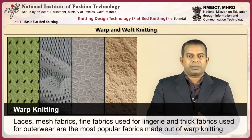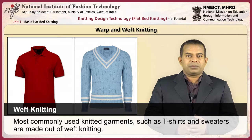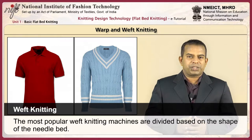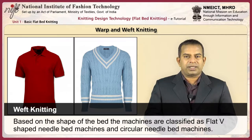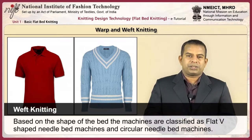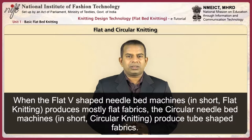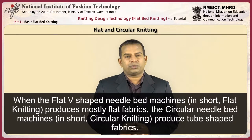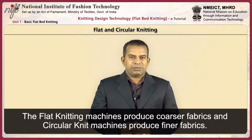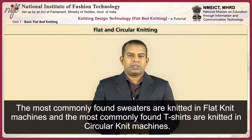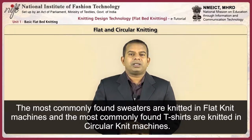The most popular weft knitting machines are divided based on the shape of the needle bed. Based on the shape of the bed, machines are classified as flat V-bed machines and circular bed machines. Flat V-bed machines, or flat knitting in short, produce mostly flat fabrics, while circular bed machines, or circular knitting, produce tube-shaped fabrics. Flat knitting machines produce coarser fabric compared to circular knit machines which produce finer fabric. The most commonly found sweaters are knitted in flat knit machines and the most commonly found t-shirts are made in circular knitting machines.